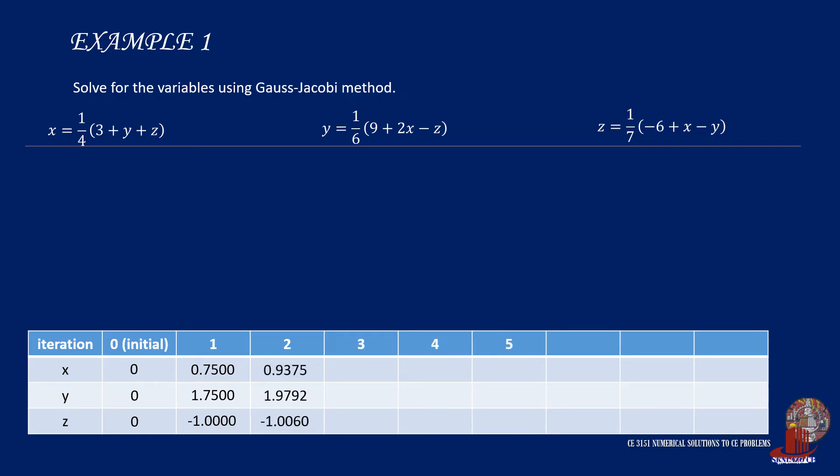We check the next iterations, starting with x sub 3 with one-fourth of 3 plus 1.9792 less 1.0060 to get 0.9933. y sub 3 is one-sixth of 9 plus 2 times 0.9933 minus negative 1.0060 to have 1.9988. Then z sub 3 is one over 7 of negative 6 plus 0.9933 minus 1.9988, and we arrive at negative 1.0008.